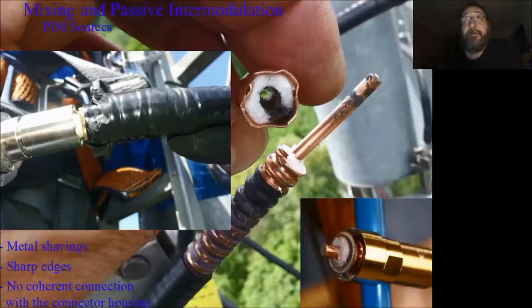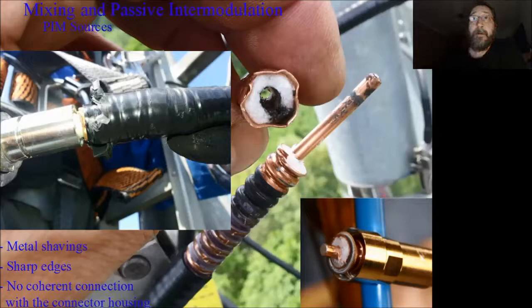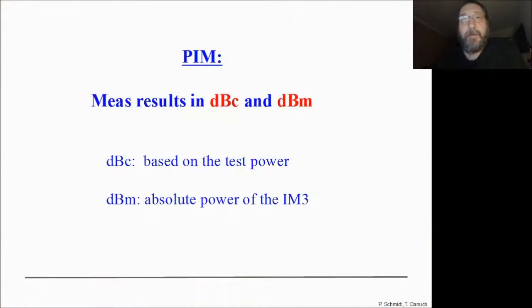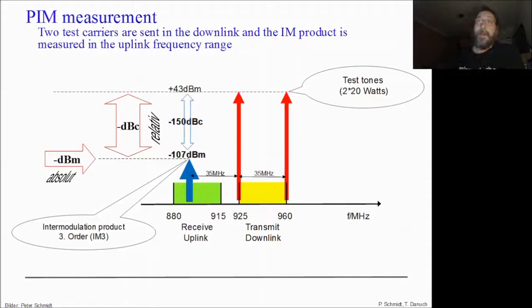PIM sources are: badly mounted or connected components, sharp edges, and oxide in connectors. Now we have to speak about measurement values for passive intermodulation. Measurement results are given in dBc and dBm. The dBc is based on the test power of the test equipment. dBm is the absolute power of the intermodulation products of third order. Here you have two carriers transmitting test tones.